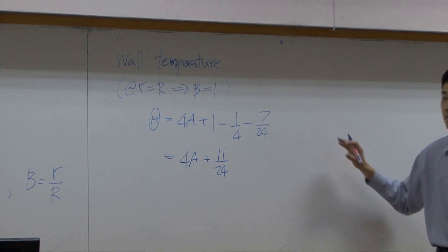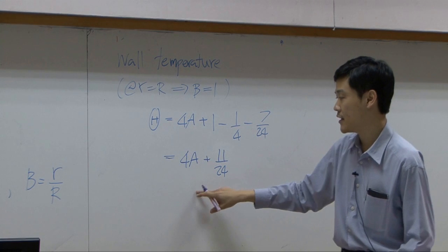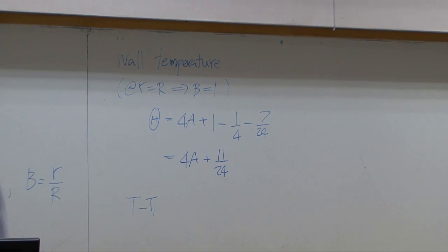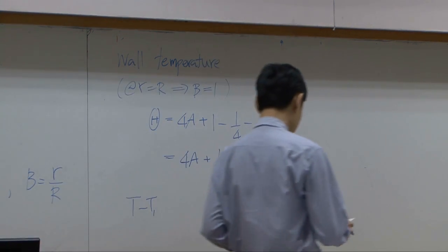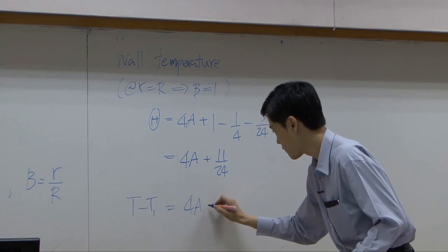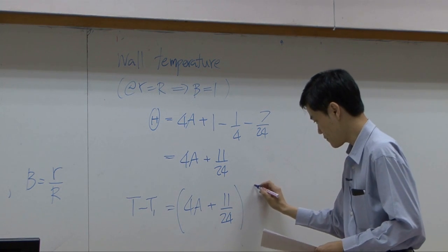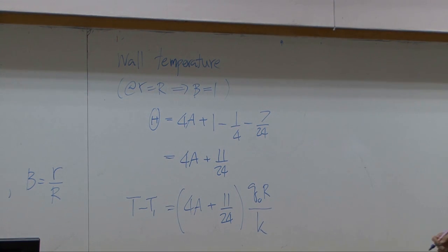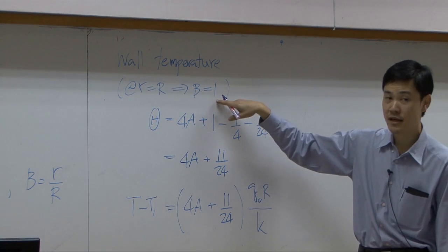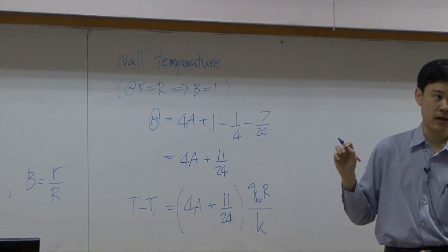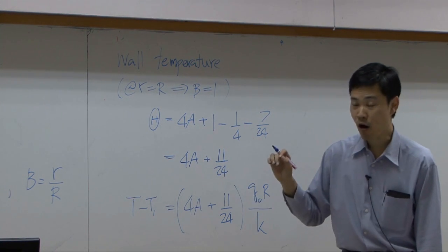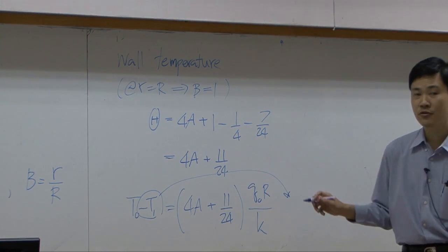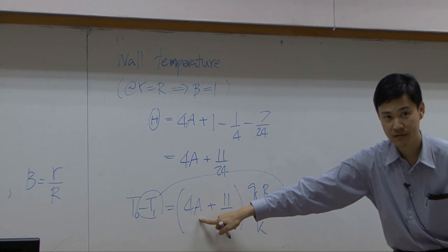This is wall temperature. If you put definition of theta in here, you get T minus T1. T1 is inlet temperature of the fluid. So you have fluid coming down at temperature T1. T1 is inlet temperature of the fluid. And according to our convention, T at the wall is called T0. So this is T0. You can bring T1 to this side, you get T0 as a function of z.